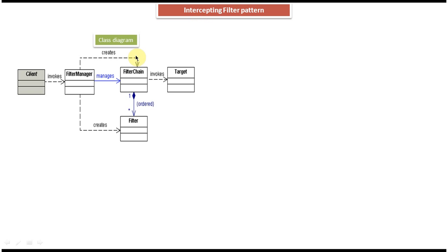We will see the class diagram of intercepting filter design pattern. These are the five main classes involved: first one is client, second one is filter manager, third one is filter chain, fourth one is target, and the fifth one is filter.